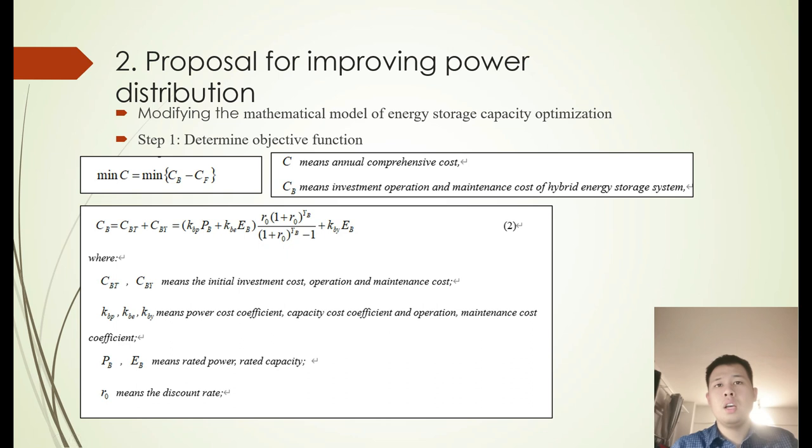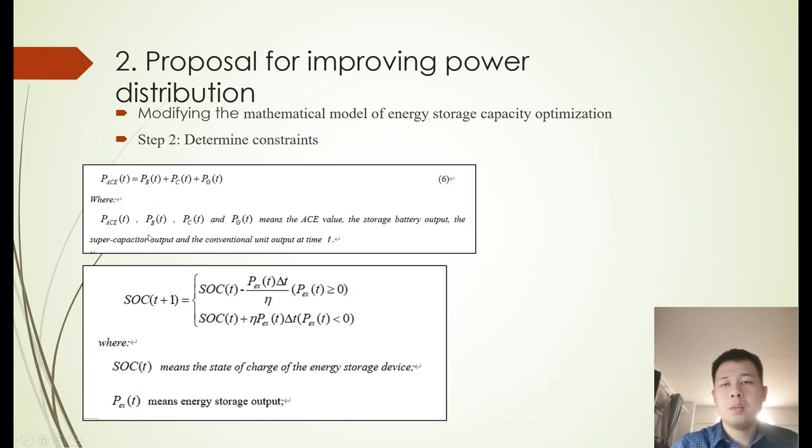Okay, let's get on to several critical parts in our proposal. The first step of modifying the mathematical model is to determine the objective function. You can see that here this is the objective function that we use in this proposal. C means annual comprehensive cost, CB means investment operation and maintenance cost of the HESS, and here the formula illustrating the components of CB.